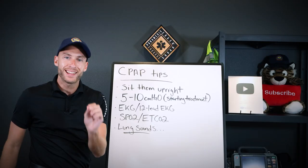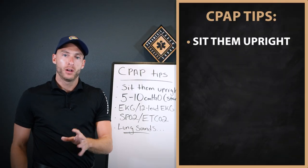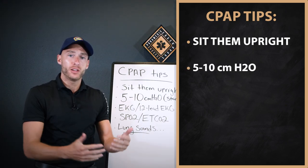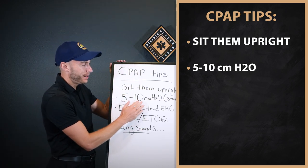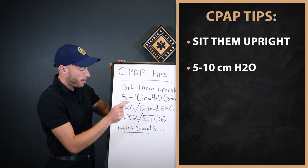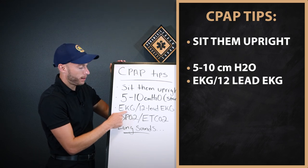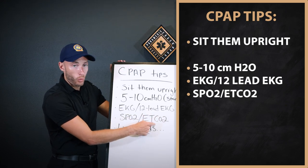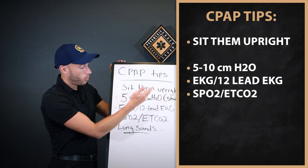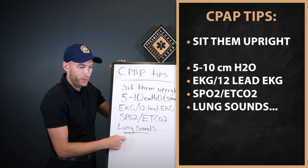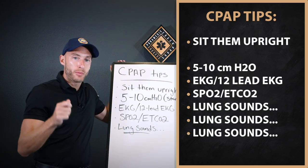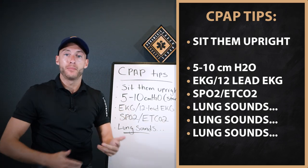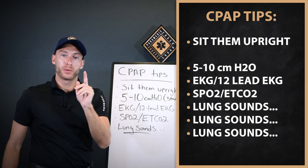Final notes: sit the patient upright. Initial PEEP dose is typically 5 to start, with 10 being a fine starting dose — so 5 to 10 to begin treatment. Do your cardiac monitoring, get a 12-lead EKG, monitor your SpO2, and you can do end-tidal CO2 with CPAP. Lung sounds, lung sounds, lung sounds — keep reassessing those. Trend everything throughout transport until you reach the hospital.